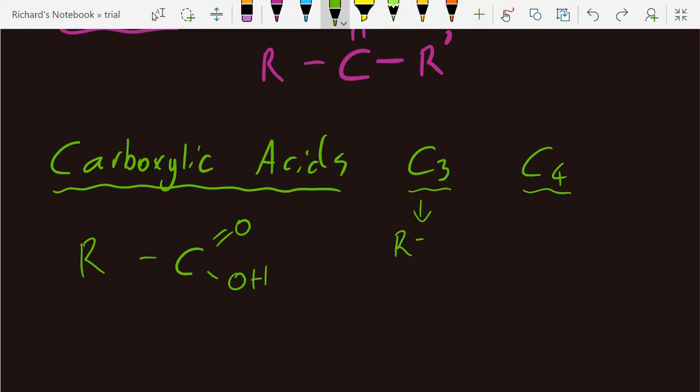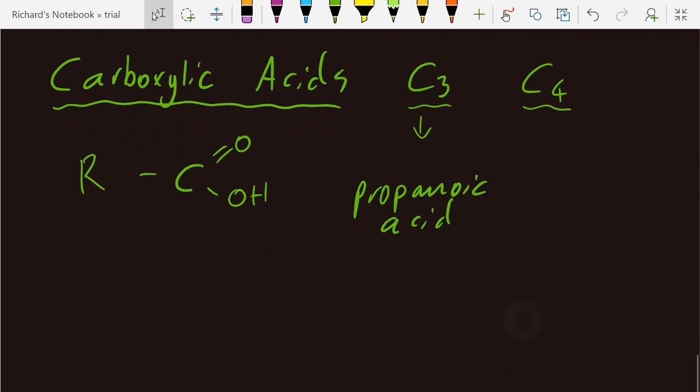If I want to do propanoic acid, the one with three carbons, I'm going to have to use R as the ethyl group, leaving out the hydrogens for clarity here. So that's propanoic acid.